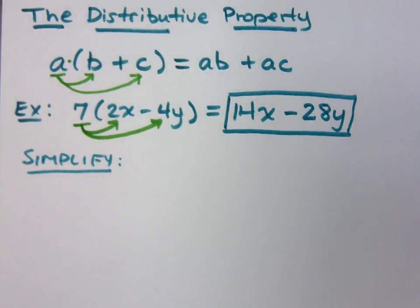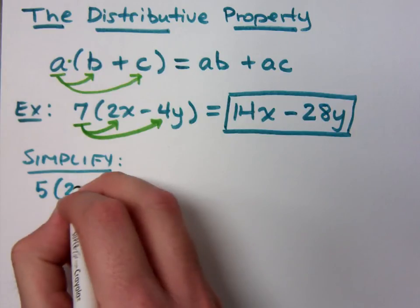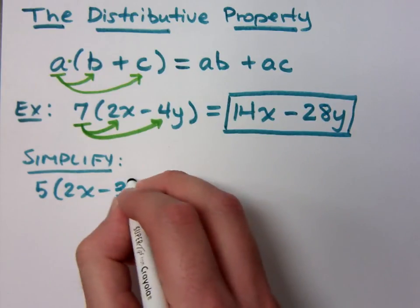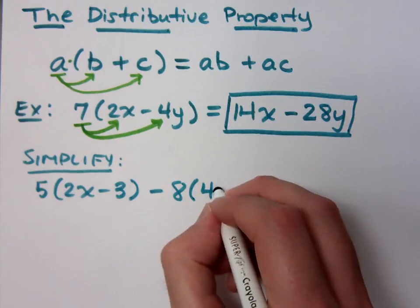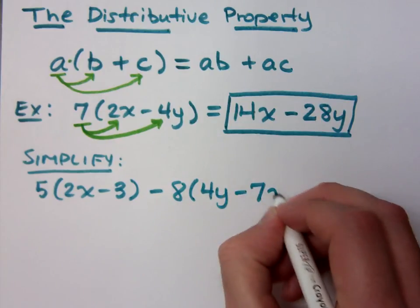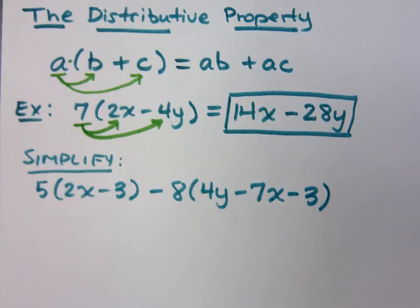So, let's take this distributive property, and let's use this to simplify some expressions. Understand that what we have here are expressions. We are not solving anything. We're just taking the information that's given to us, taking the problem in the expression given to us. And we're going to simplify it. So, here's this problem. If you want to see the result, stick around after the break.